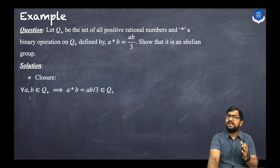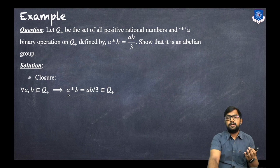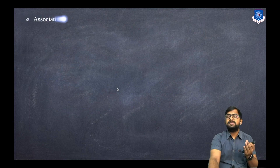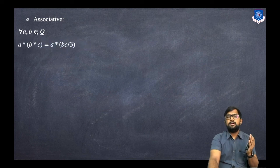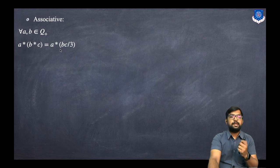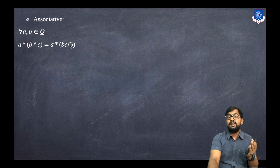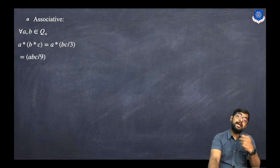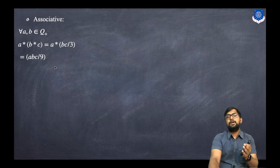First, closure: for every a, b in Q+, a star b = ab/3, which is clearly in Q+. So the closure property holds. For associativity, take any a, b, c in Q+. The left-hand side: a star (b star c) = a star (bc/3) = a·(bc/3)/3 = abc/9.